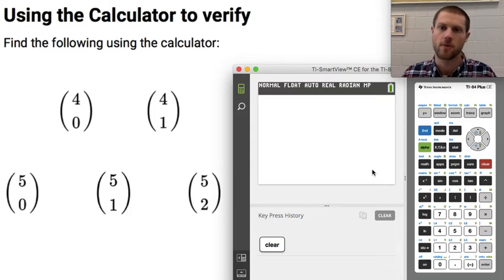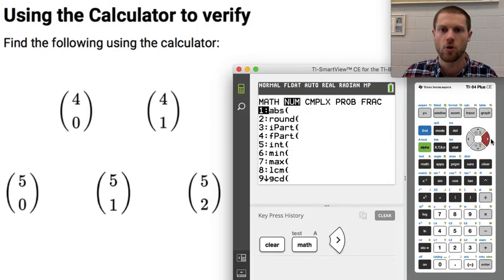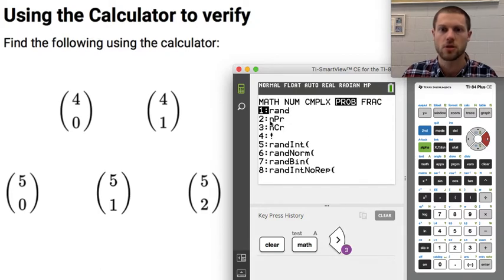And depending on which calculator you have, it might be a little bit different for you. So this is one of the newer ones. If I press math and scroll over to probability, this is going to be found under the probability tab.